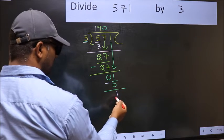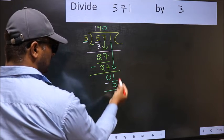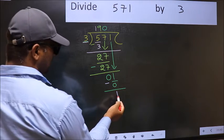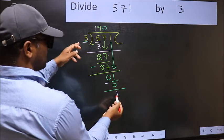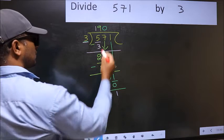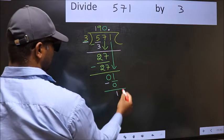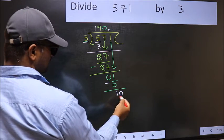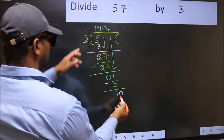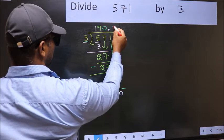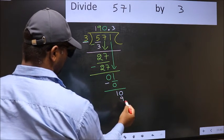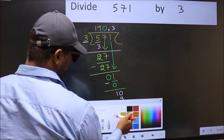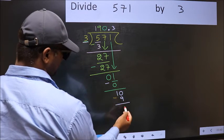Over here, we did not bring any number down. And 1 is smaller than 3. So now you can put a dot and take 0 here. So 10. A number close to 10 in 3 table is 3 3 is 9. Now you should subtract 10 minus 9, 1.